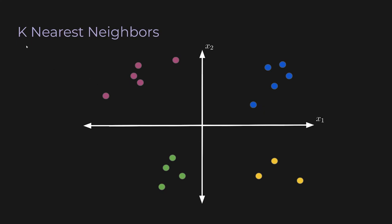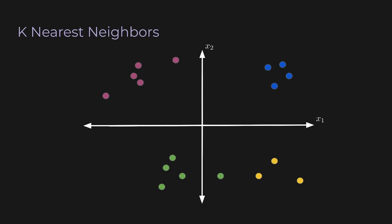Instead of k=1 we can consider k=2, 3, or any other number. We just make the circle bigger — here we have another unknown gray point and with a much bigger circle we have 1, 2, 3, 4, 5 data points inside. So k=5, and we just take the mode. There are more green points than yellow points, so we say the class of this new point is green.